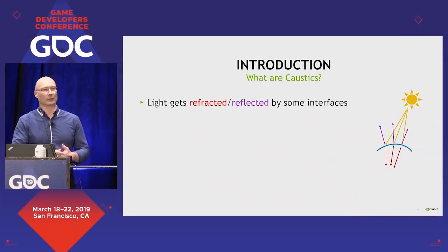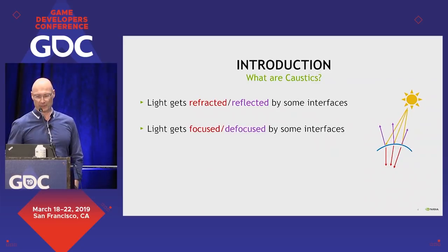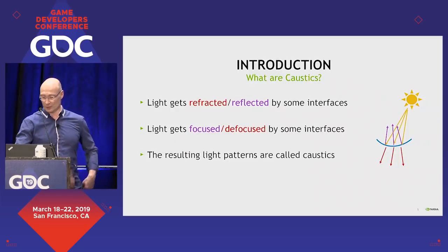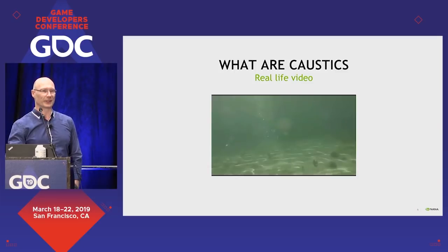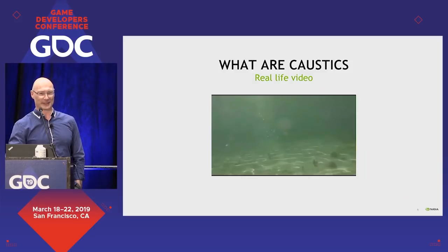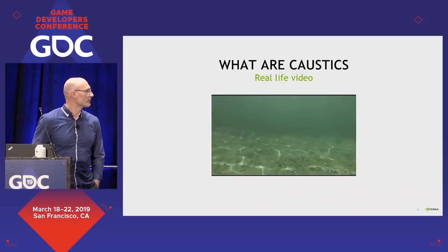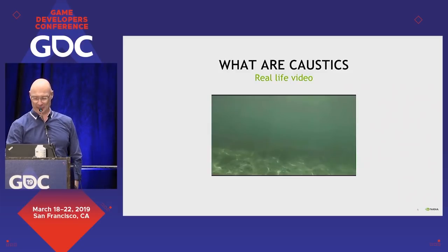Some interfaces refract and/or reflect light, and by doing that, light gets focused or defocused, and the resulting light patterns are what's called caustics. Just in case you don't know what they are, this is a video I've taken many years ago snorkeling — the quality is not very great, but you can see what caustics look like in real time, and you might even see a little bit of volumetric caustics there in the video. These are the light patterns I was talking about.